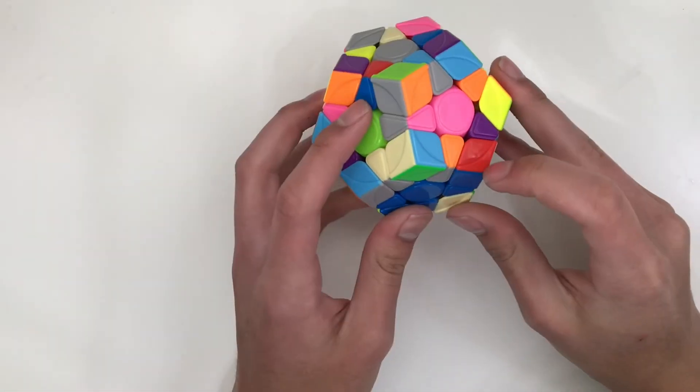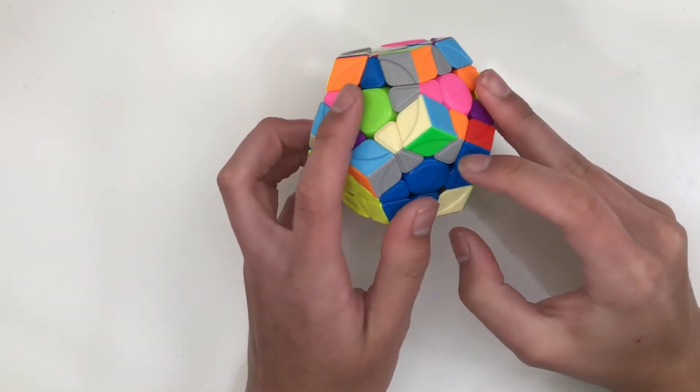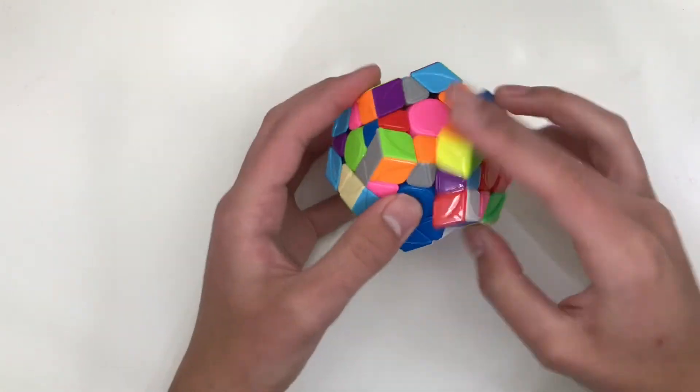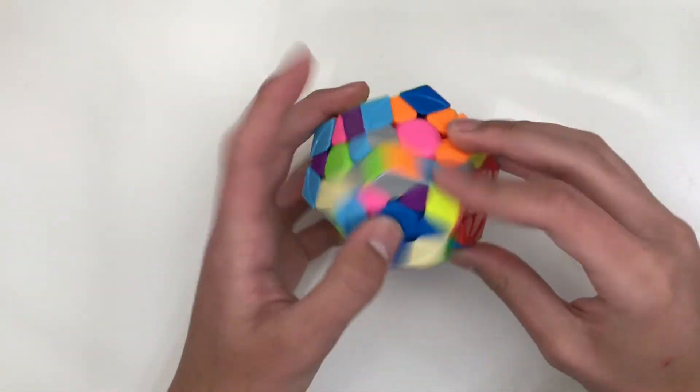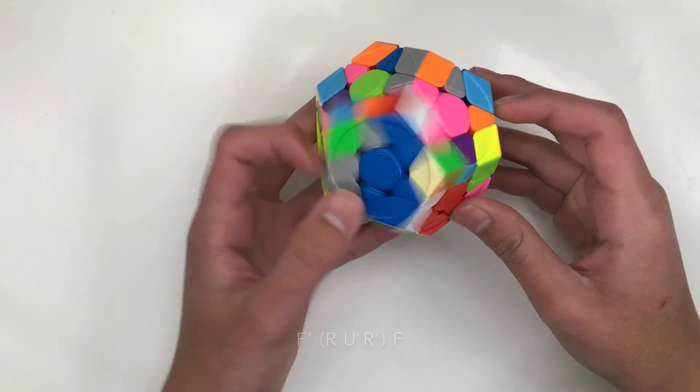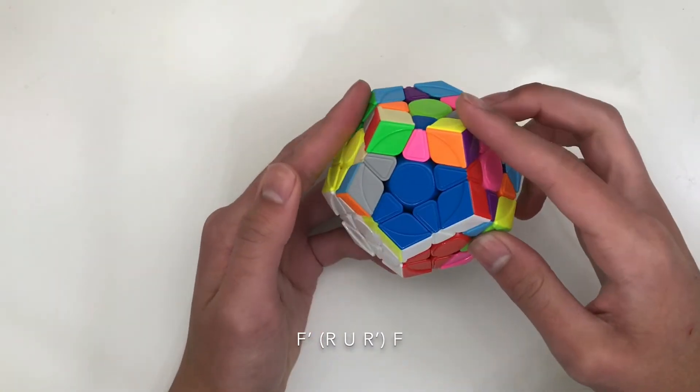When you have the pieces right here in this position and these two stickers match, you can, instead of doing this and setting it up to like that case, you can set it up to a three mover like this with an F' and then insert and then bring it back down.